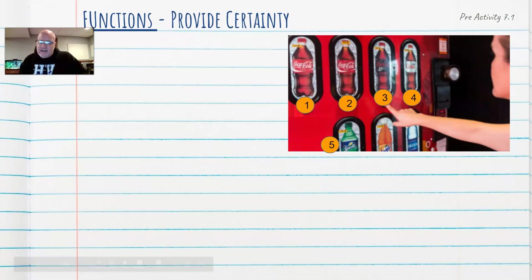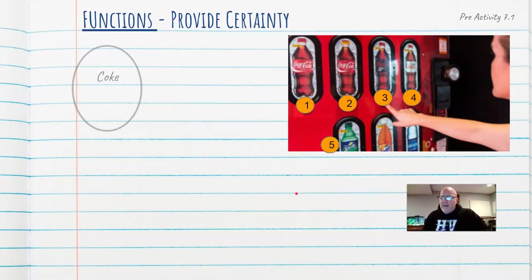Well, let's take that same example with the Coke. And now let's say that I'm walking away with a Coke, right? You see me leaving the vending machine with a Coke. Do you know what button I pushed to get that Coke? Do you know specifically what button I pushed to get that Coke? The answer is no. I could have pushed button one or I could have pushed button two. There's no certainty there. So as I map this relationship from left to right, no certainty because a Coke could be mapped to button one or a Coke could be mapped to button two.